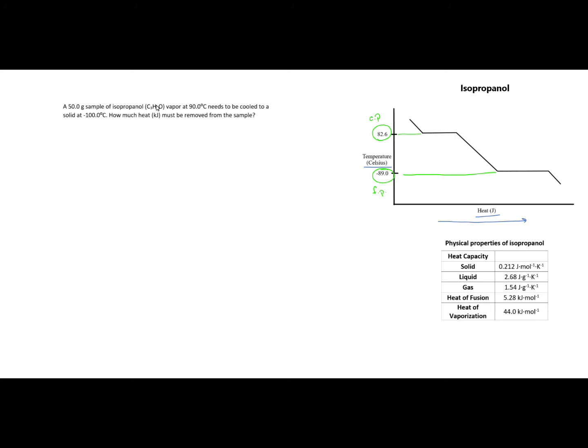Notice the shape of our cooling curve here. It has five distinct regions. I'm going to call these one, two, three, four, and five. Regions one, three, and five correspond with temperature changes, and regions two and four correspond to phase changes. We have also been given a very handy table of physical properties of isopropanol which we will be using in our calculations.